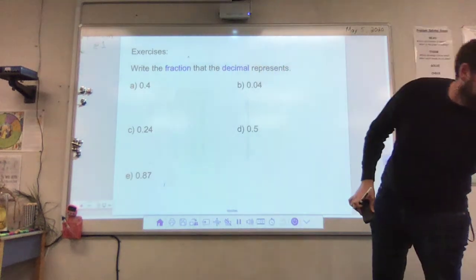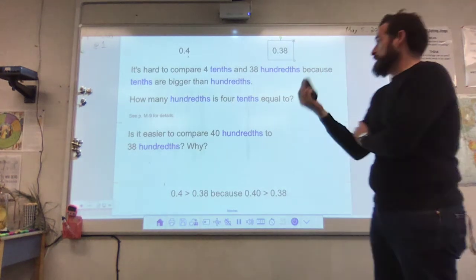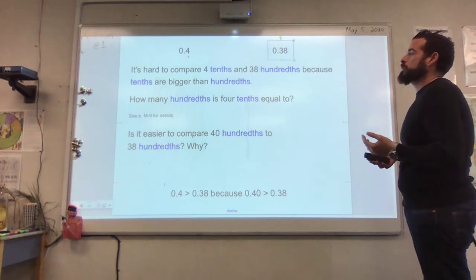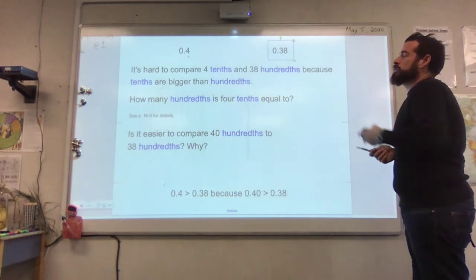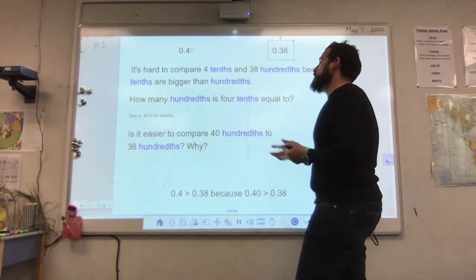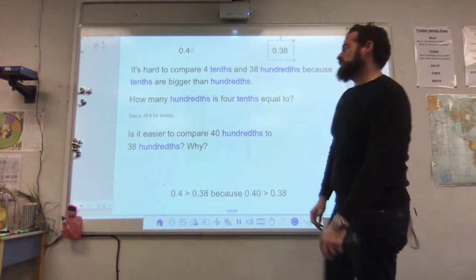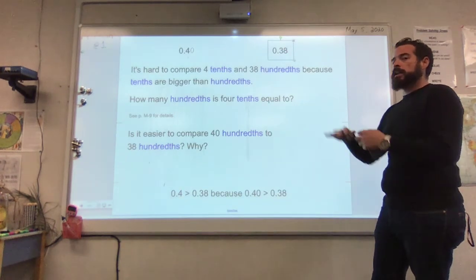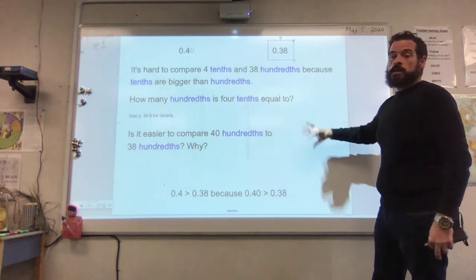As we've discussed with fractions, the further to the right on the number line, the bigger the value. So writing them in order from least to greatest: zero point zero eight is less than zero point three four, which is less than zero point six zero. When ordering with a number line, you simply read from left to right — the further right the number, the bigger it is.